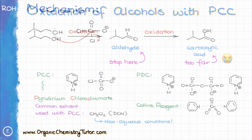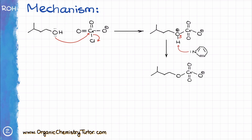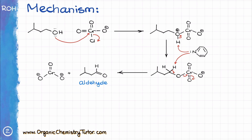So let's look at the mechanism. The oxidation of alcohols with PCC starts with the nucleophilic attack by the oxygen of the alcohol onto the chromium chlorochromate. The protonated intermediate that we get after that attack will lose the proton to the pyridine, which is going to be our base in this reaction. Next, pyridine will pull off one of the alpha hydrogens to create the C=O double bond.